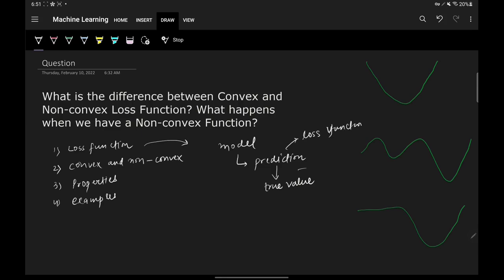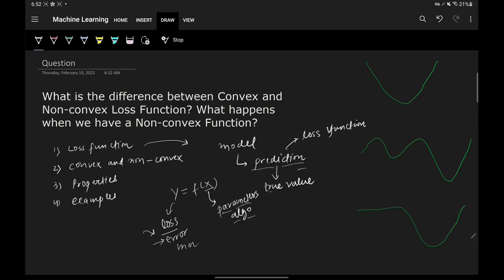The loss function is a value which gives us an understanding of how well our machine learning model is performing. It is a mathematical function where y represents the loss or error in prediction and x represents the parameters of our algorithm. If x changes — if you change the parameter values — the loss can reduce or increase. Our idea is to minimize this error because if we minimize it, the prediction will be closer to the true value.